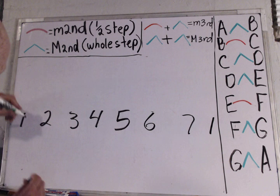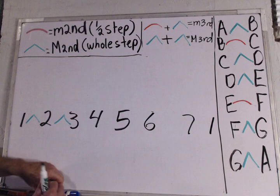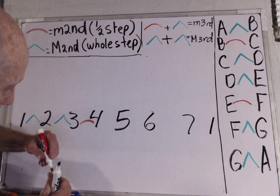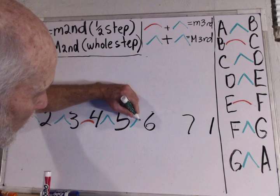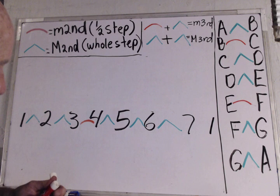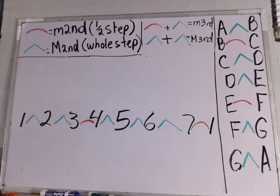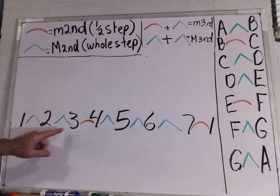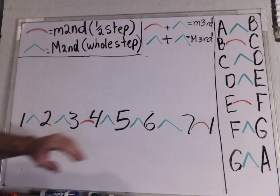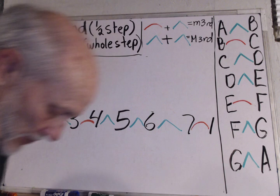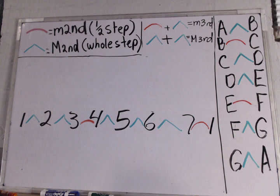That's at the octave. Now, as we said, the formula is whole, whole, half, whole, whole, whole, half. So it's whole, whole, half between scale degrees three and four. Then whole, whole, whole, and ending up pushing into the octave a half step. Now, this is the structure of a major scale. This stuff is never going to change.